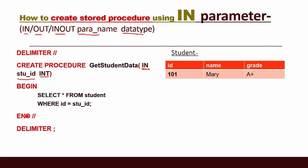Between BEGIN and END we write our SQL codes: SELECT * FROM the student table WHERE id equals stu_id. So whatever value we give for stu_id, it will match that value with the id column and retrieve the data from the student table.